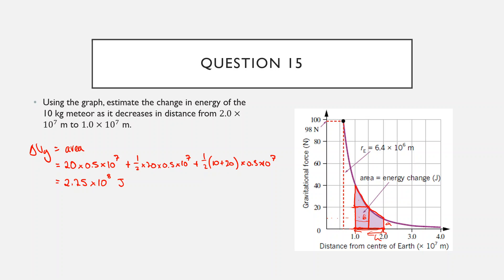So if the meteor is losing height — decreasing its distance from earth — then it's losing potential energy, and you can imagine that's going into speeding it up, giving it kinetic energy. The hardest part is making sure you're getting your scale right and not multiplying the wrong numbers together. Don't just use 0.5 as the width — it's 0.5×10⁷. Make sure your scales are in meters, and make sure force is in newtons, not kilonewtons. Make sure you do all appropriate conversions before you work out the area.